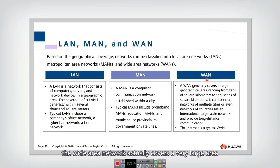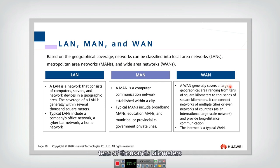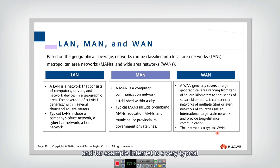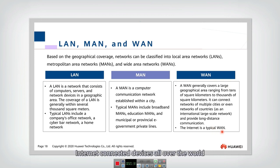The wide area network actually covers a very large area. They can range from tens of thousands of kilometers. For example, the internet is a very typical wide area network — they are connected all over the world.